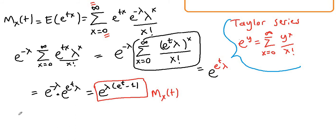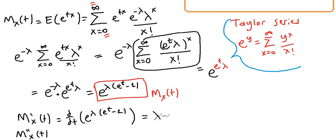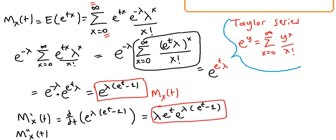Now let's take the first derivative of the moment generating function. The first derivative is lambda e to the t times e to the lambda times e to the t minus 1, because the derivative of e to the a times argument is a times e to the at.